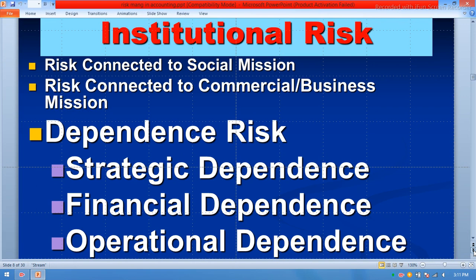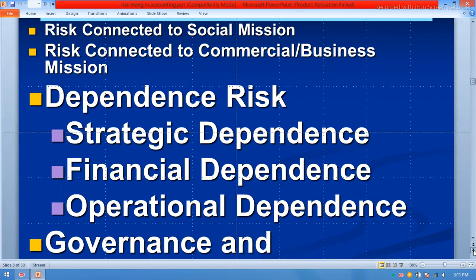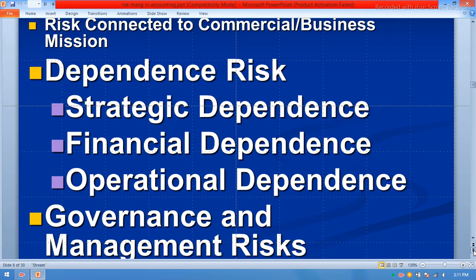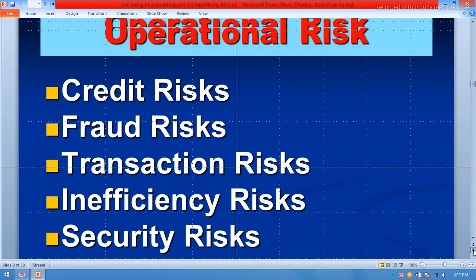Under institutional risk, we have risk connected to social mission and risk connected to commercial business mission. Dependence risks are strategic dependence, financial dependence, and operational dependence. Government and management risk fall here as well. Operational risks include credit risk, fraud risk, transaction risks, inefficiency risk, and security risk.